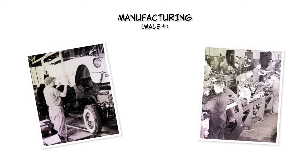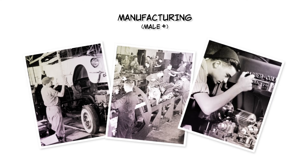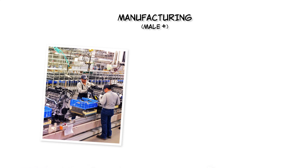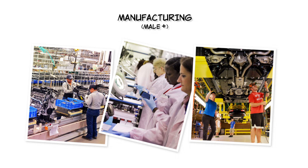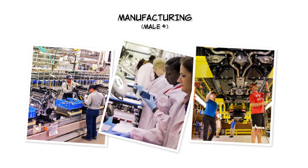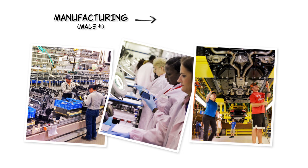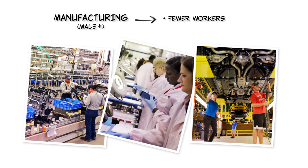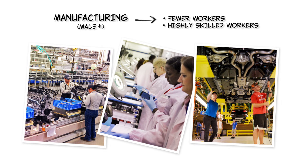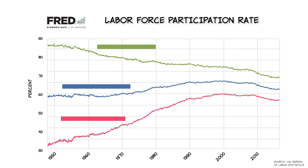Manufacturers used to hire a lot of relatively low-skilled, low-education workers, most of whom were men. Technology, however, has made manufacturing much more productive. We actually manufacture more goods in the United States than ever before, but we do so using fewer workers. And the workers who are hired in manufacturing are more likely to be highly-educated software engineers than relatively low-skilled line workers. The decline in manufacturing jobs has hit low-skilled, low-educated male workers pretty hard.